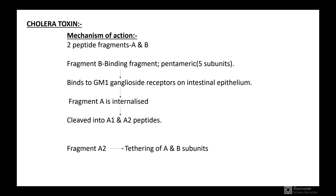Today I will be taking bacterial toxins part 2, starting from cholera toxin. Cholera toxin is secreted by Vibrio cholerae. The mechanism of action involves two peptide fragments: Fragment A and Fragment B. Fragment B is the binding fragment, which is pentameric having 5 subunits. It binds to the GM1 ganglioside receptors on intestinal epithelium.